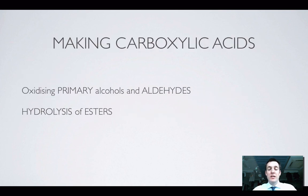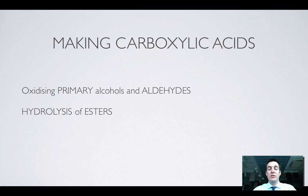As for making carboxylic acids, you can oxidize a primary alcohol — if you oxidize it enough, it will go past an aldehyde and all the way to a carboxylic acid. Or you could oxidize an aldehyde. You can also hydrolyze an ester — breaking it down into its component parts. Remember, when we take a carboxylic acid and react it with an alcohol we make an ester, so when we break it down we get a carboxylic acid and an alcohol back.